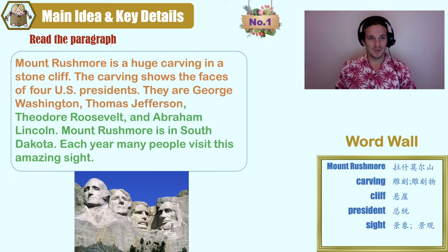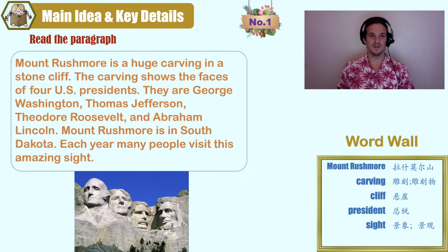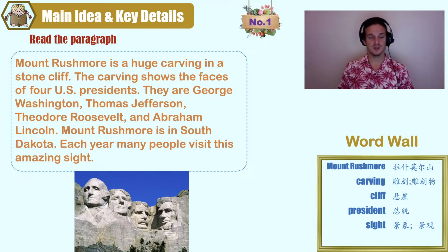Mount Rushmore is a huge carving in a stone cliff. The carving shows the faces of four U.S. presidents. They are George Washington, Thomas Jefferson, Theodore Roosevelt, and Abraham Lincoln. Mount Rushmore is in South Dakota. Each year, many people visit this amazing site.